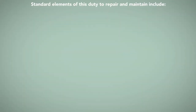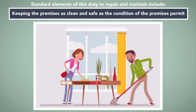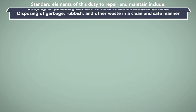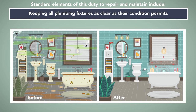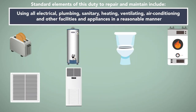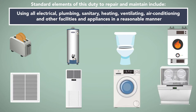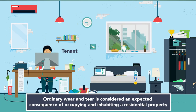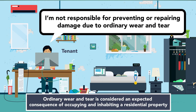Standard elements of this duty to repair and maintain include keeping the premises as clean and safe as the condition of the premises permit, disposing of garbage, rubbish, and other waste in a clean and safe manner, keeping all plumbing fixtures as clear as their condition permits, and using all electrical, plumbing, sanitary, heating, ventilating, air conditioning, and other facilities and appliances in a reasonable manner. Note that ordinary wear and tear is considered an expected consequence of occupying and inhabiting a residential property, and so a tenant is not responsible for preventing or repairing damage due to ordinary wear and tear.